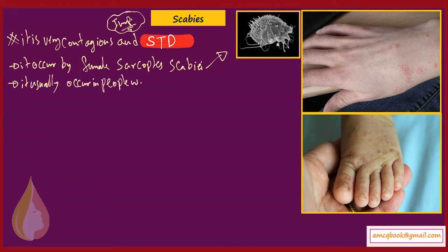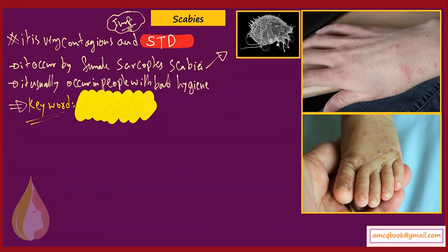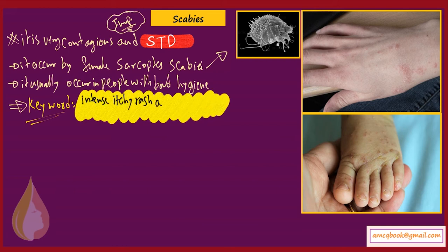The key keyword to remember: intense itchy rash on the feet and hands of an Aboriginal child. When you see a case or scenario describing this, think scabies. Take a look at the pictures, as they are very important.